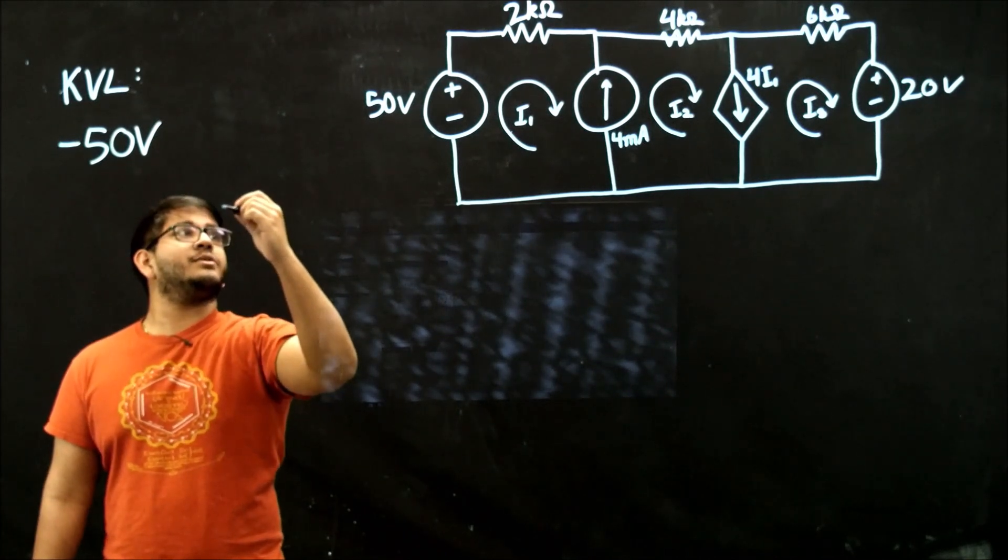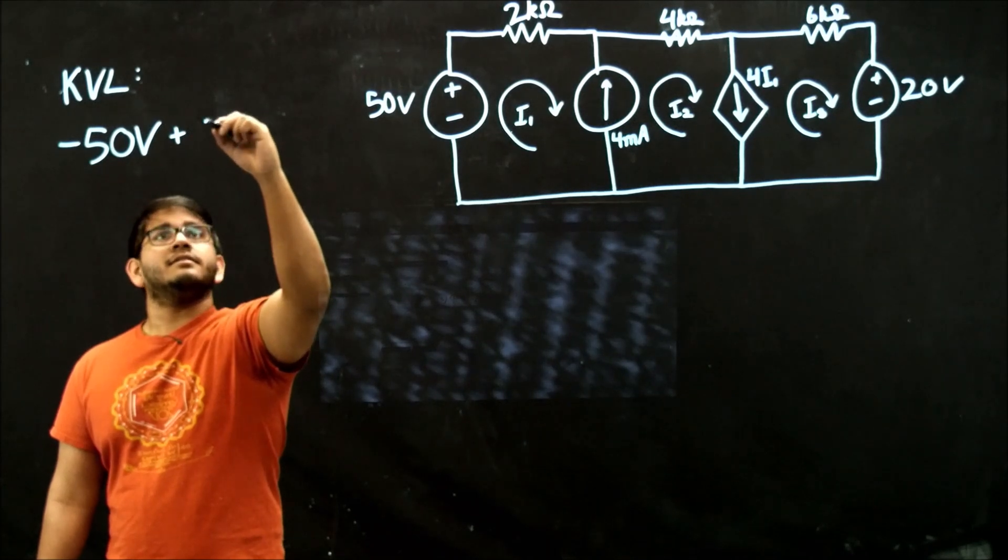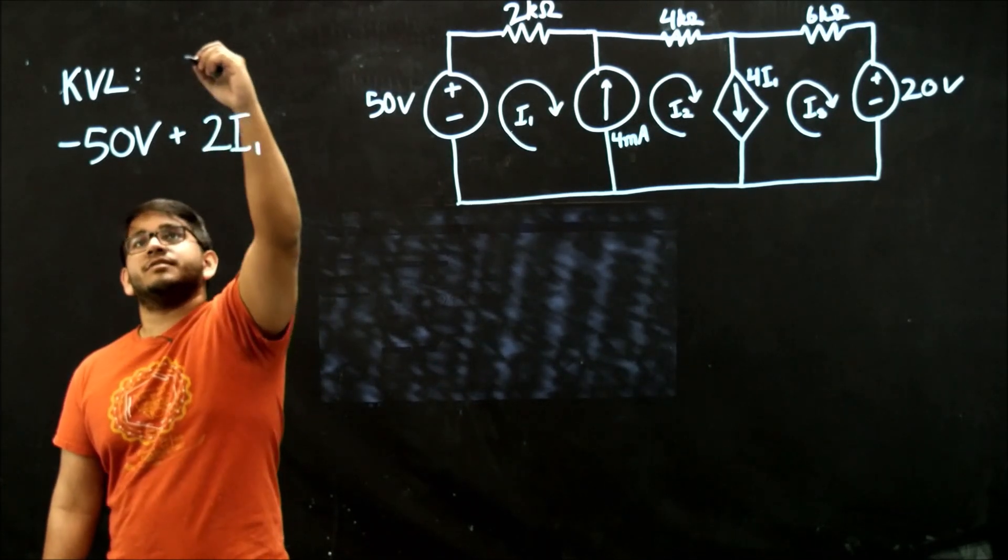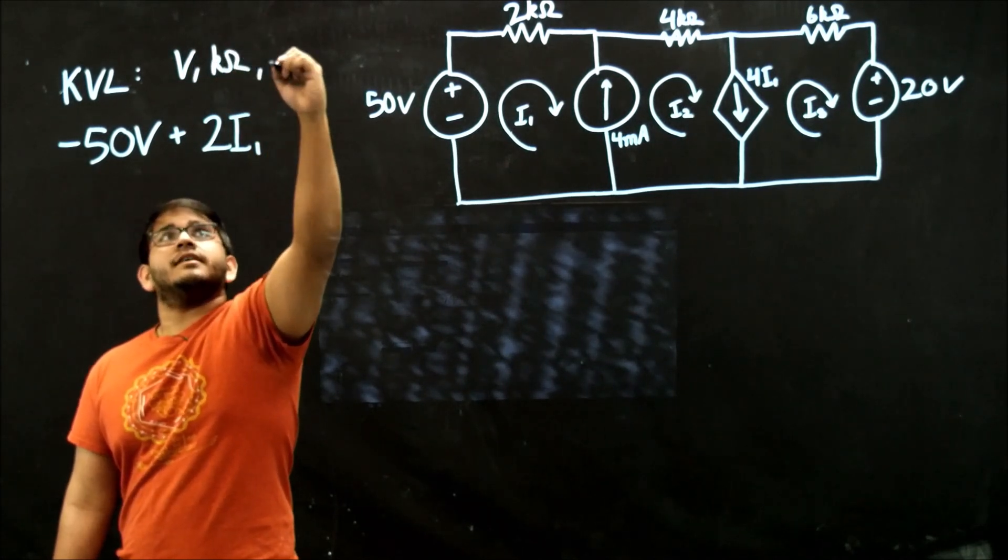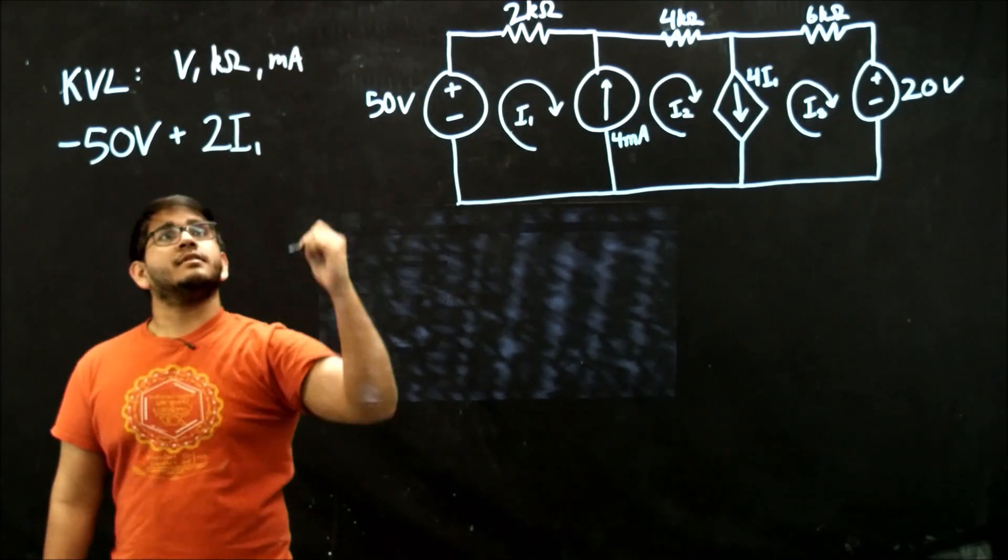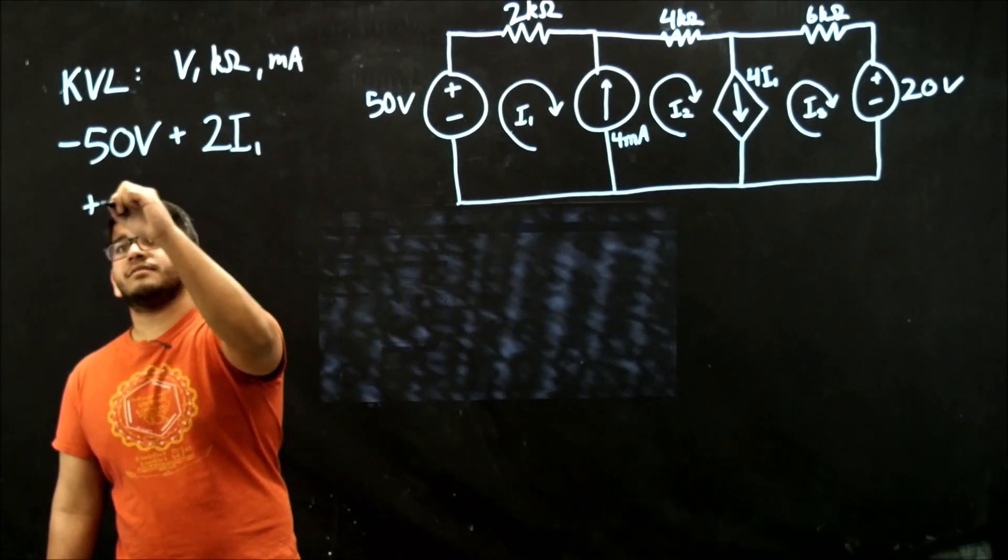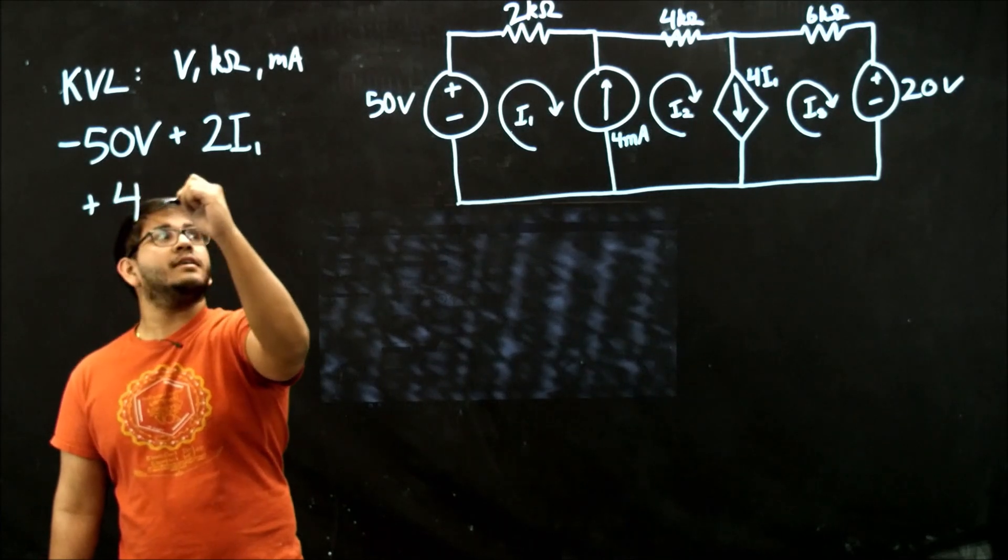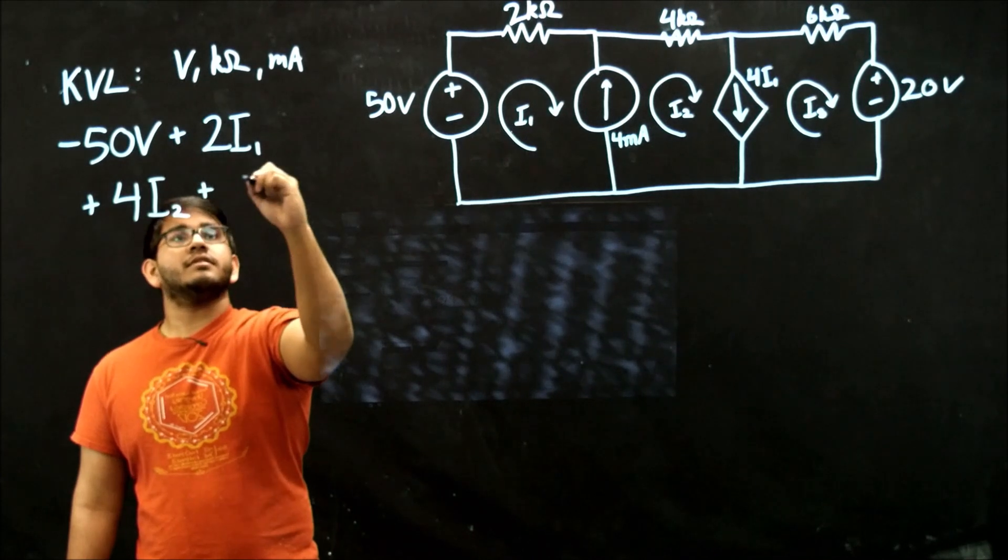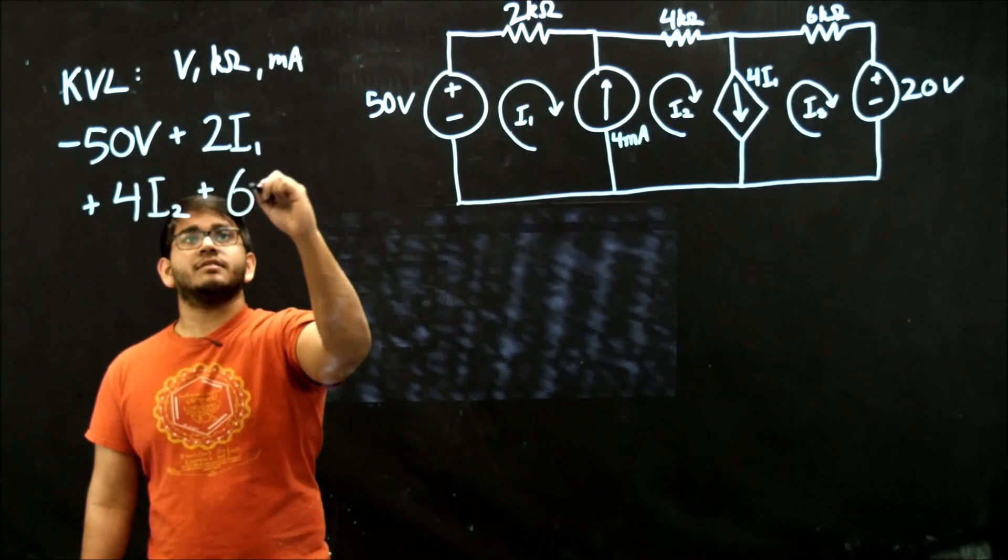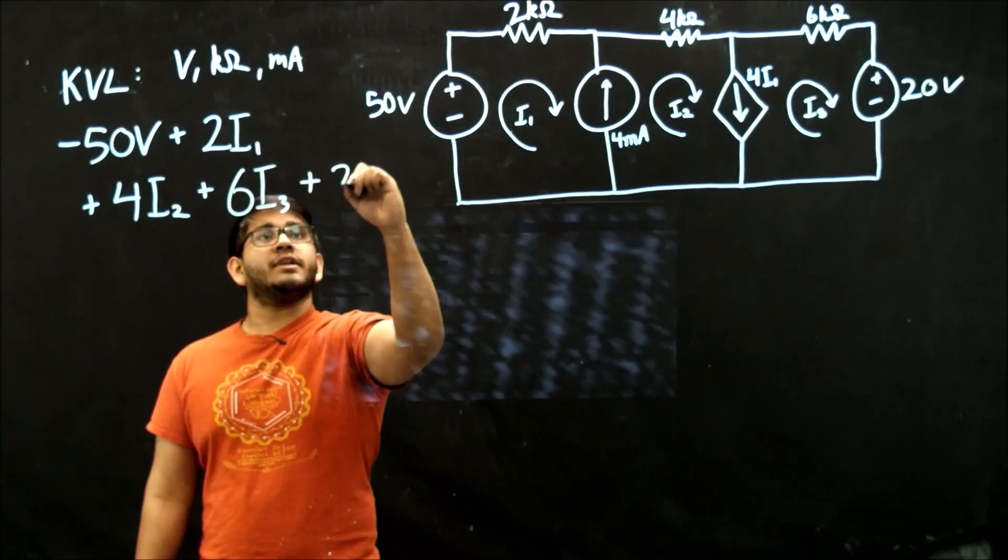And then we will add 2i1, and this is in terms of volts, kilohms, and milliamps. So add 2i1, I'll work down here, plus 4i2, plus 6i3, plus 20 volts.